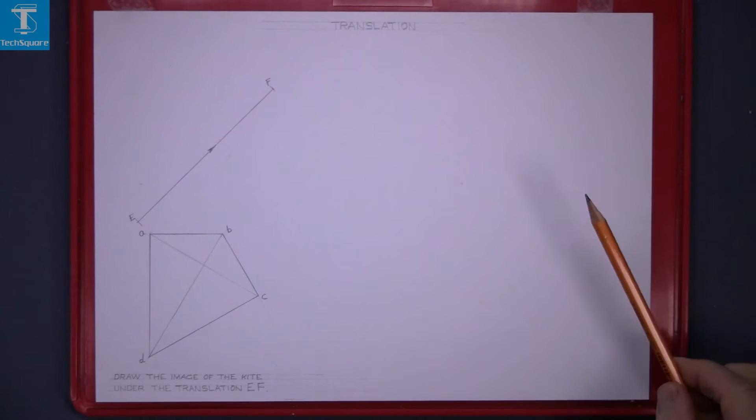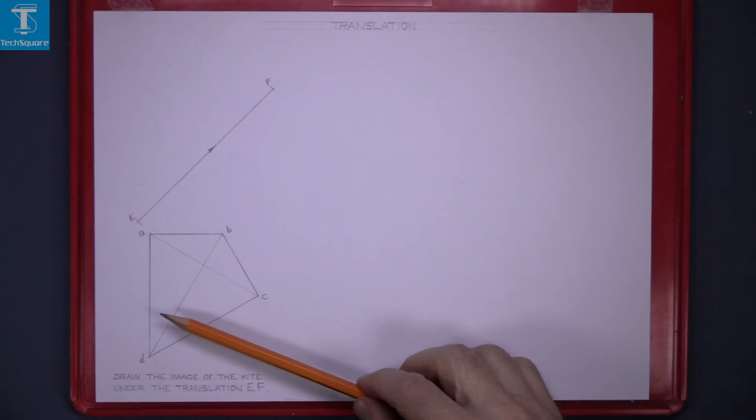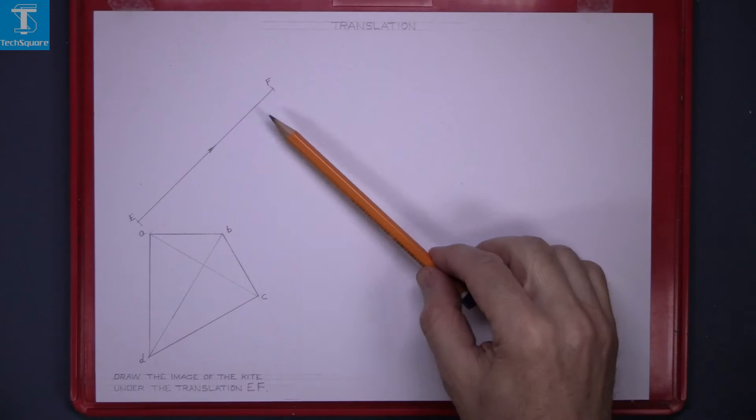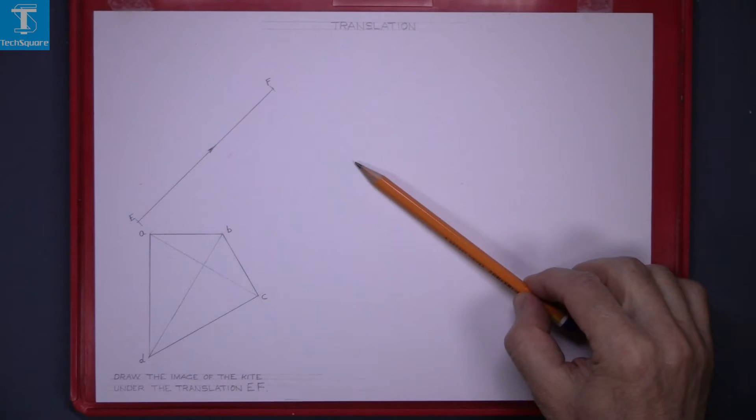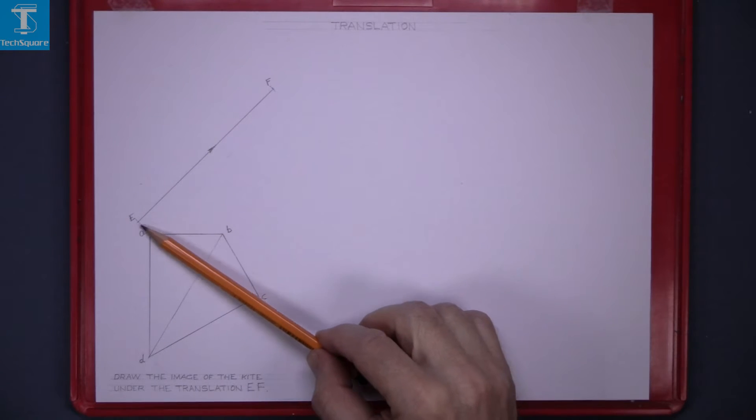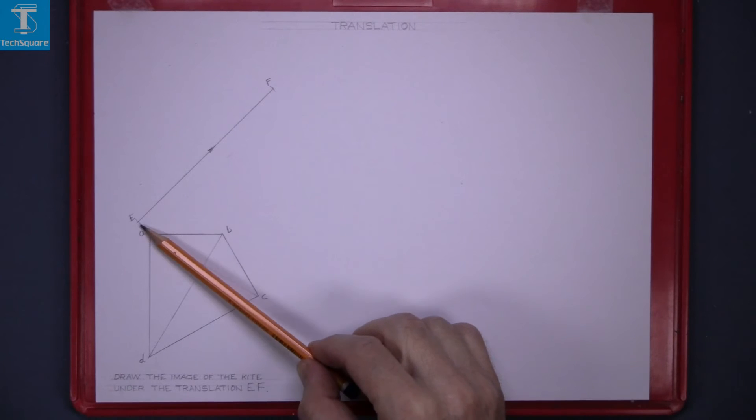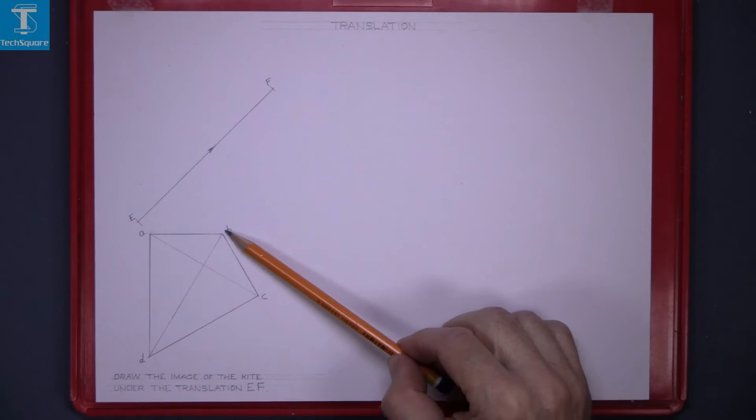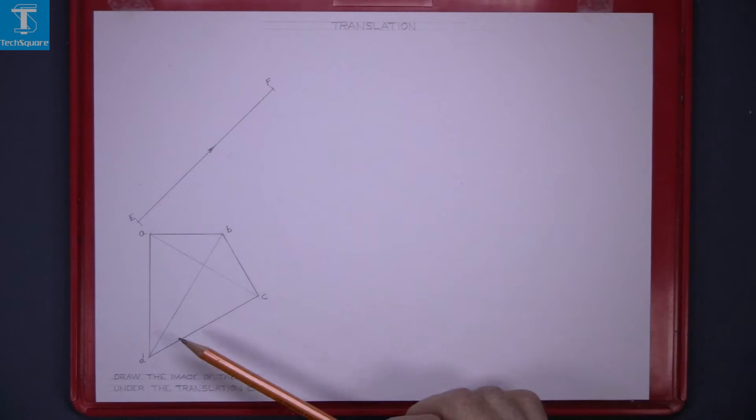Translation. This figure here is going to move under the translation of EF so all points will move in the same direction and they'll move the same distance. So this distance EF is 100, so each point will move 100 in the direction of EF.